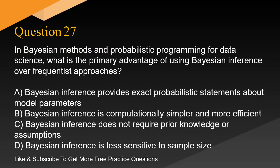Question 27. In Bayesian methods and probabilistic programming for data science, what is the primary advantage of using Bayesian inference over frequentist approaches? A. Bayesian inference provides exact probabilistic statements about model parameters. B. Bayesian inference is computationally simpler and more efficient. C. Bayesian inference does not require prior knowledge or assumptions. D. Bayesian inference is less sensitive to sample size.